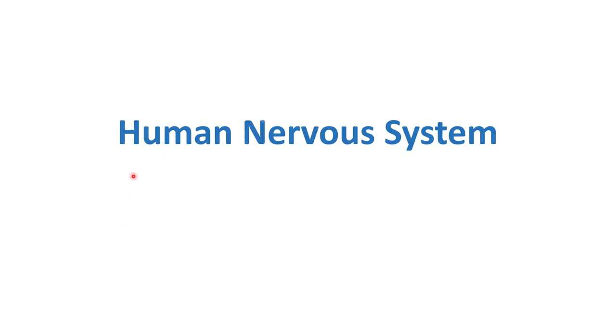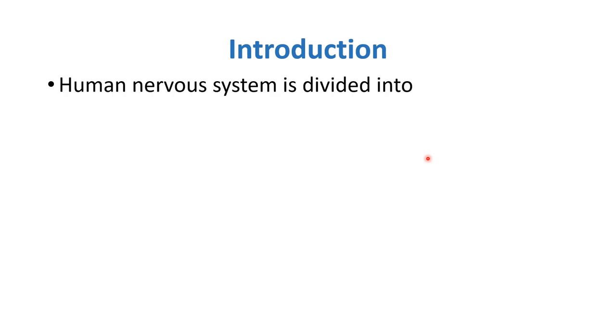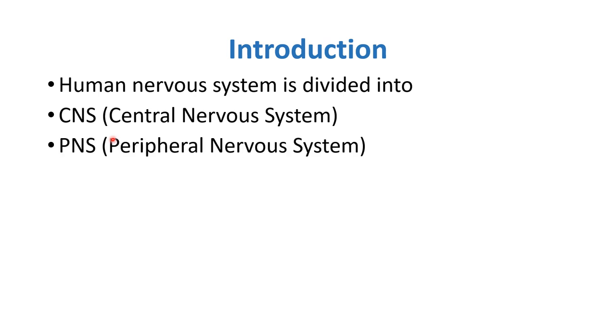As-salamu alaykum. In today's lecture, we are going to start the human nervous system. Let's start with the introduction. The human nervous system is divided into the central nervous system, CNS, and the peripheral nervous system, PNS.